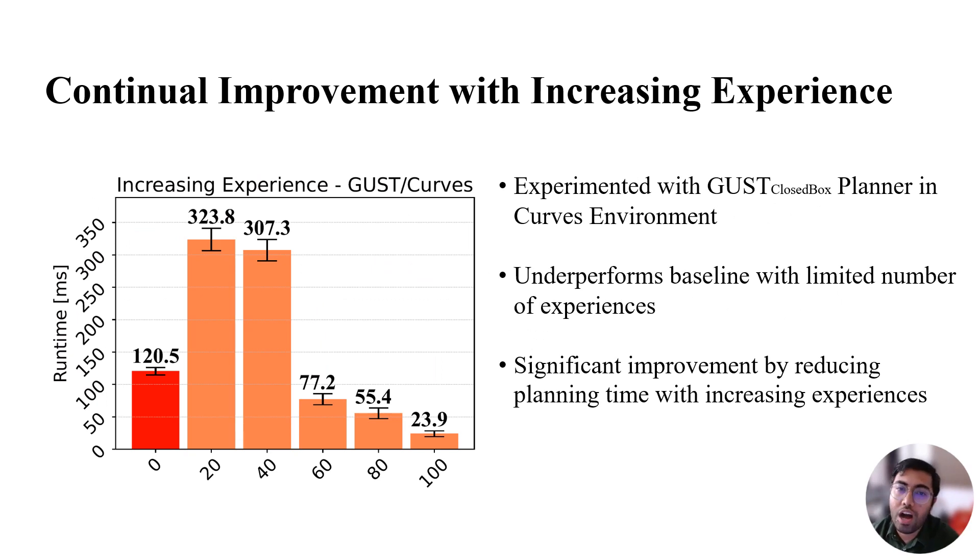Finally, we show how the running time of the GUST closed box planner to solve planning problems in curves environments changes while having access to more available motion plans. With only 20 or 40 available past motion plans, motion memory underperforms the baseline GUST but with increasing experiences we see a significant reduction in runtime and improvement in planning efficiency.